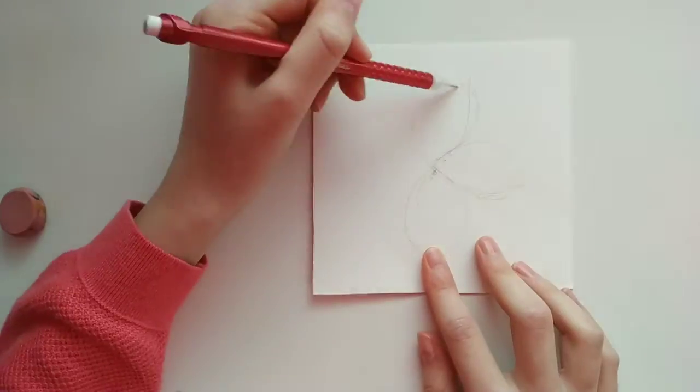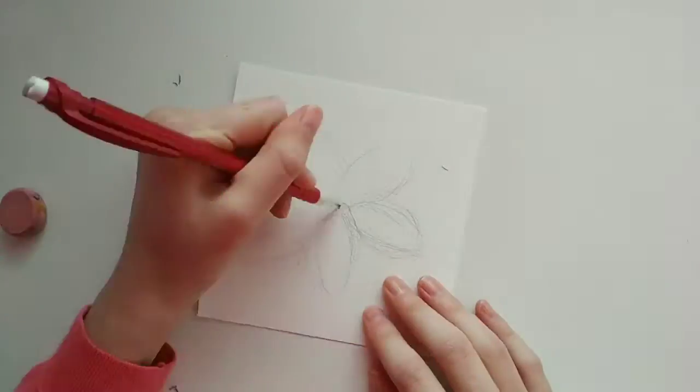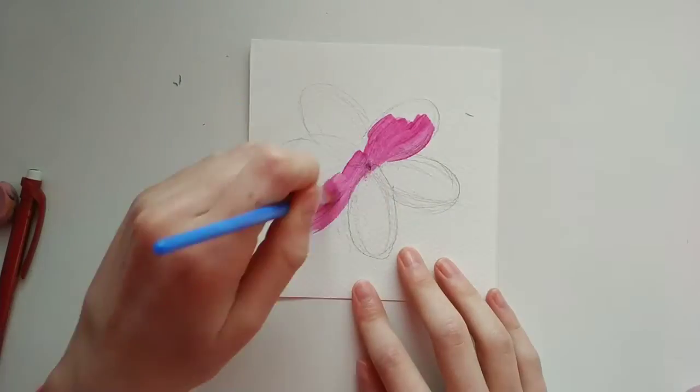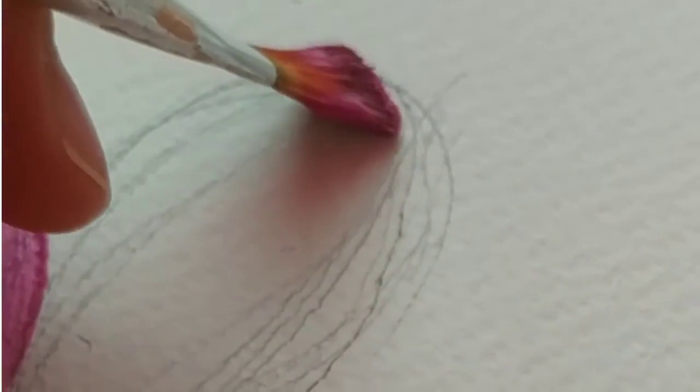So I started off by doing a simple sketch of a flower and then I got to painting and I was just doing a lot of back and forth with white paint and pink paint.